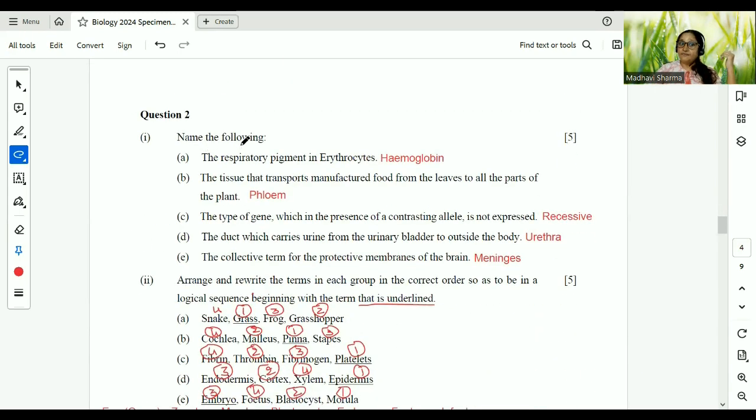We start with question number 2. Name the following. Respiratory pigment in erythrocytes. Erythrocytes means RBC. Has to be hemoglobin. The tissue that transports manufactured food from the leaves to all parts of the plant, phloem. Remember, food, phloem. The type of gene which in presence of contrasting allele is not expressed has to be recessive. The duct which carries urine from the urinary bladder to outside the body, urethra. Collective term for protective membranes of the brain is meninges. DAP, D-A-P. Do you remember DAP? Dura mater, arachnoid and pia mater. DAP. This is how we remember.